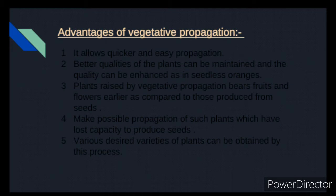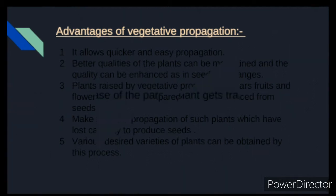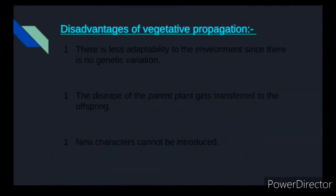When we put seeds, we wait for germination. With vegetative propagation, we simply put a direct part of the plant, and fruits and flowers come quickly. Dear students, this vegetative propagation also has some disadvantages. Let's discuss them.